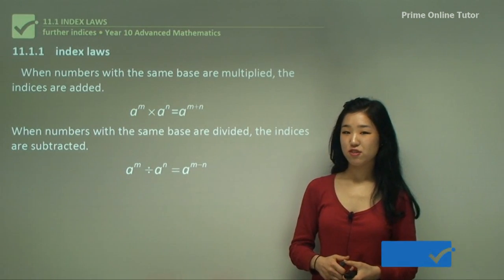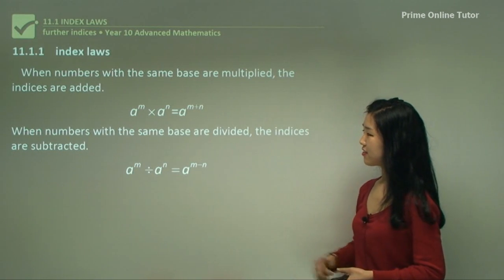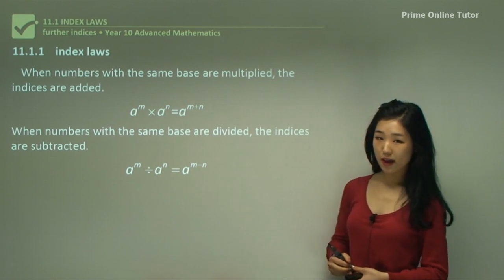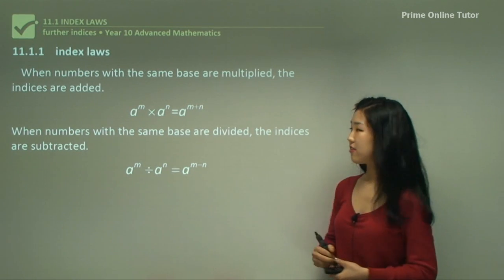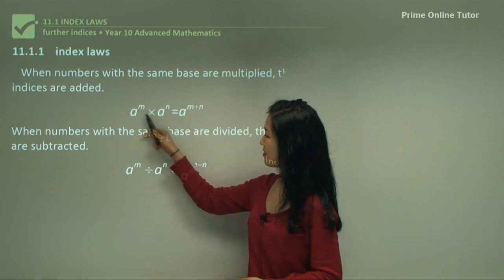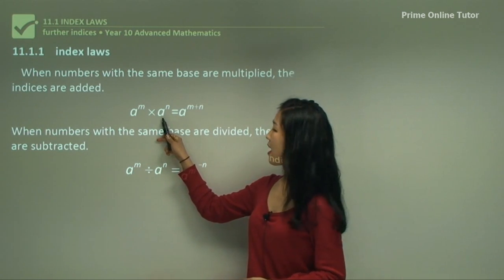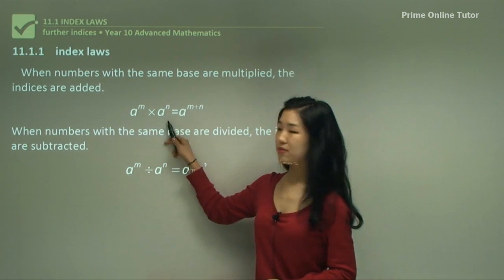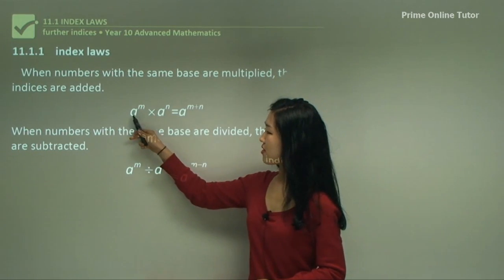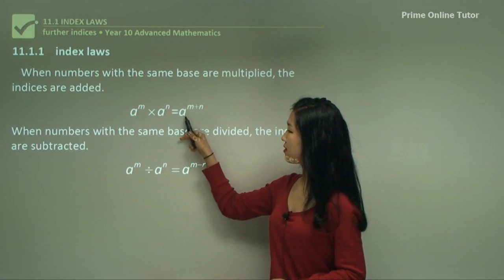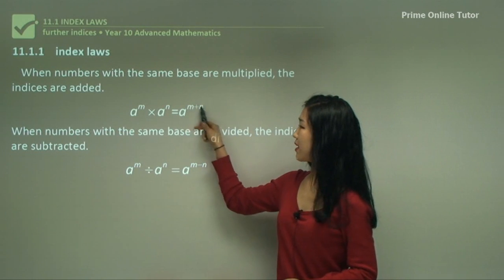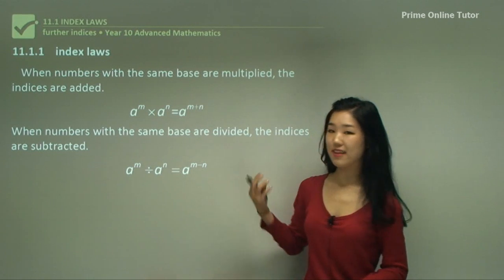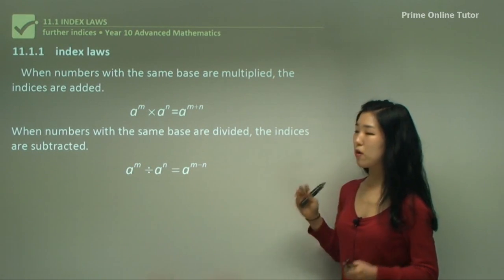I'm going to start by introducing two index laws. With the first one, when numbers with the same base are multiplied, the indices are then added. See how the base here is both a, with index m and index n. When we're multiplying the two terms together, as long as the base is the same, we leave the base as it is and simply add the indices together. So m plus n is our new index.